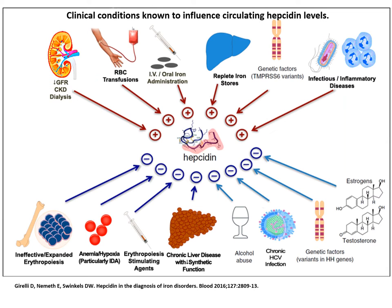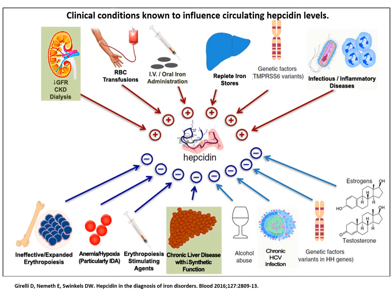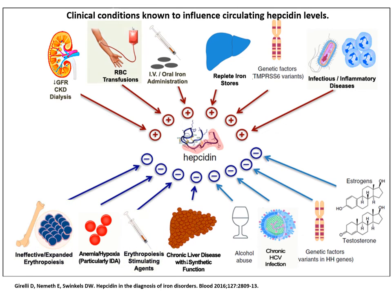Many factors can contribute to hepcidin regulation, but generally fall into a few categories: (1) Iron levels — whether additional iron is introduced into the body or iron stores are satisfactory; (2) Inflammation — whether it's an infectious disease or organ dysfunction; (3) Erythropoiesis — whether it's due to too few red blood cells, oxygen demand, stimulation of erythropoiesis, or transfusing red blood cells.